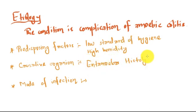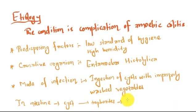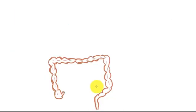Entamoeba histolytica is the causative organism. The mode of infection is ingestion of cysts with improperly washed vegetables. In the intestine, the cysts are changed into trophozoites inducing amoebic colitis.